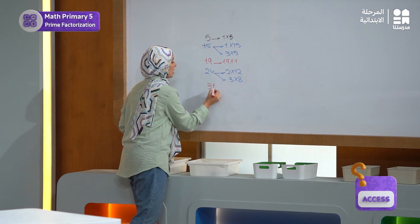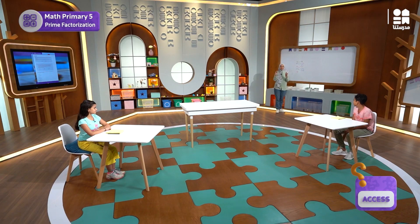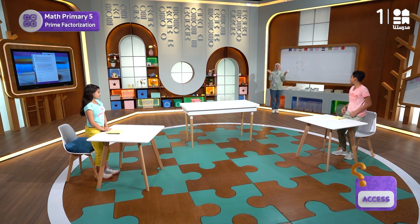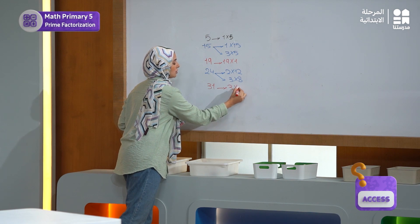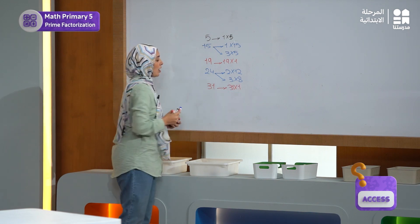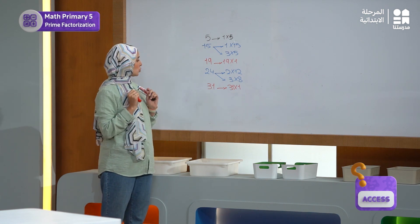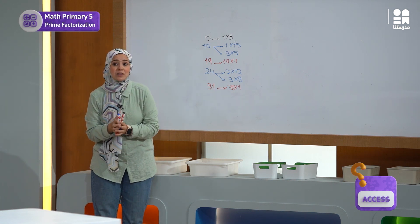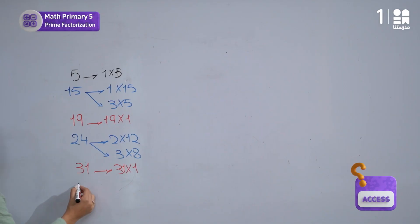If I think about the number 31 — is 31 a prime or a composite number? Prime. So are we standing or sitting? Stand. Excellent. Thank you. Sit down. Because 31 is a prime number. The factors it has are 31 and 1. The last number that we have together is the number 42.